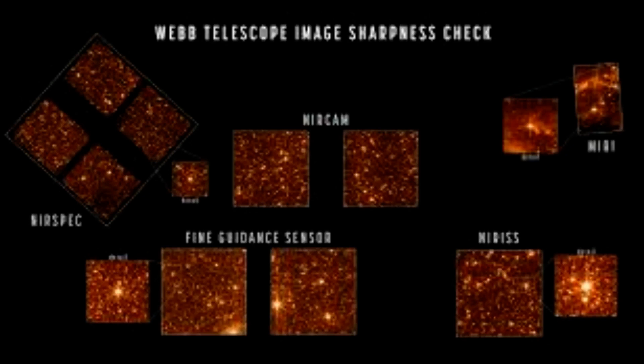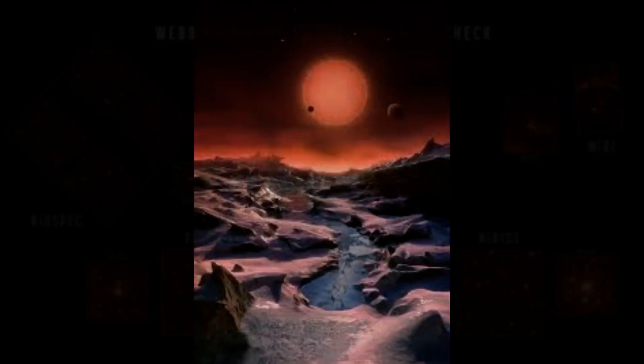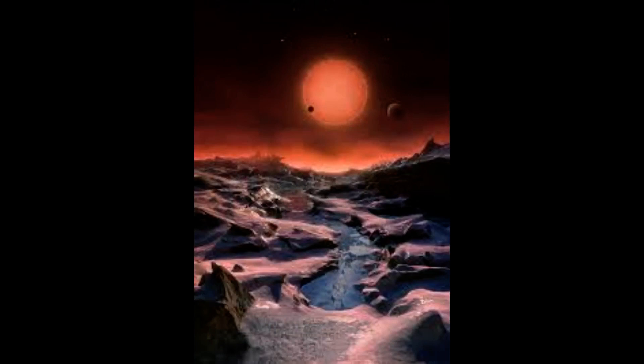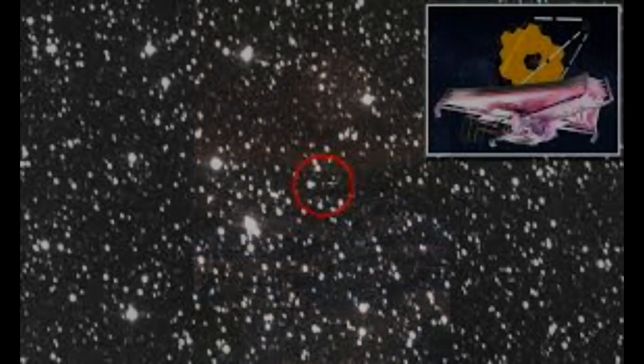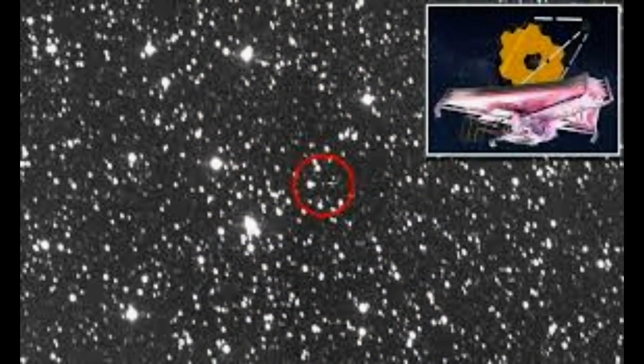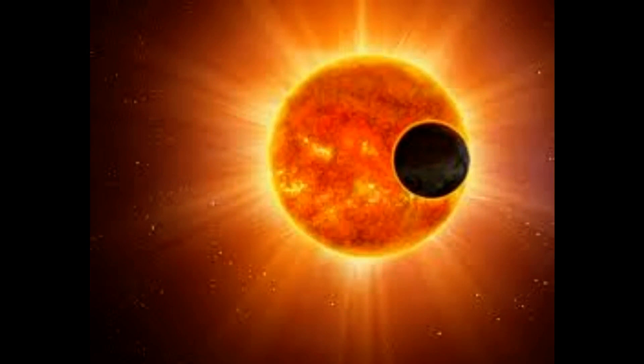NASA explained the telescope's perspective in a statement. Webb can capture images and spectra with the spectral resolution needed to study short-term phenomena like dust storms, weather patterns, seasonal changes, and in a single observation, processes that occur at different times—daytime, sunset, and nighttime—of a Martian day.